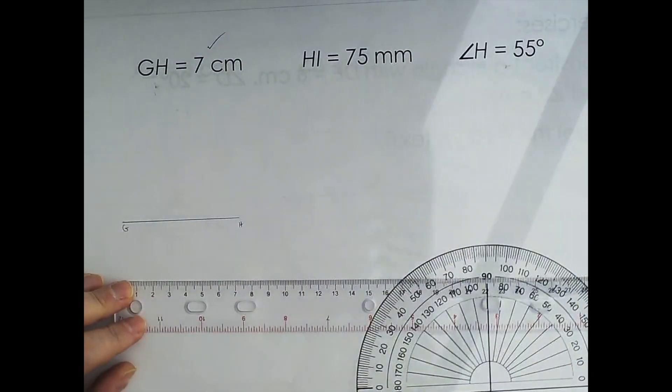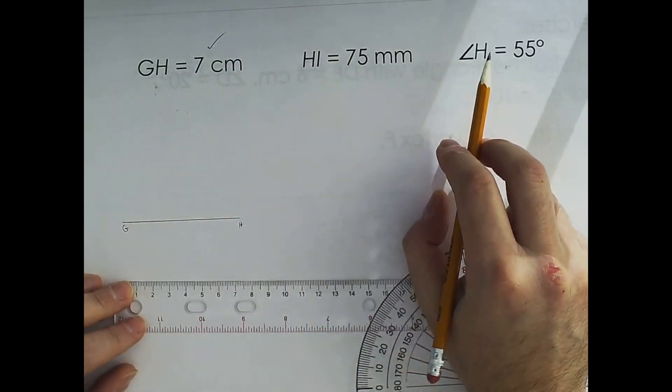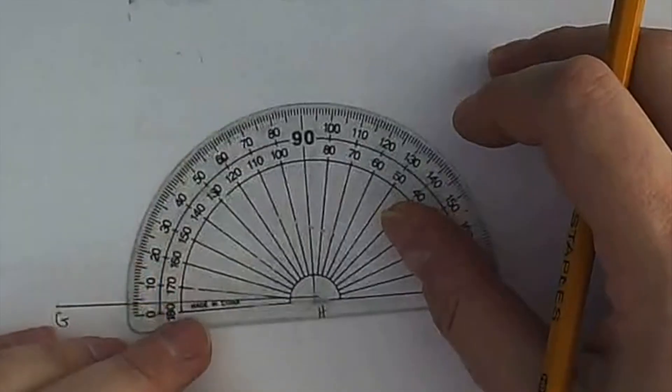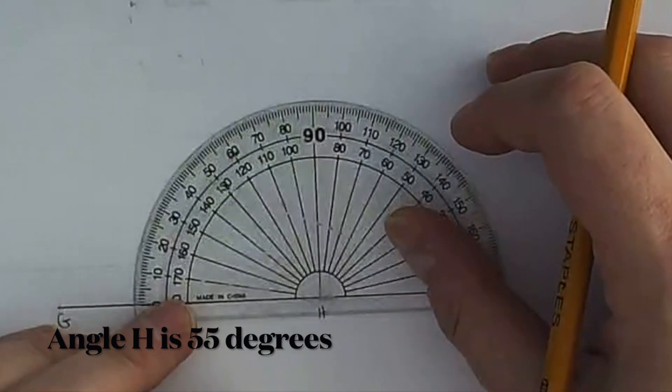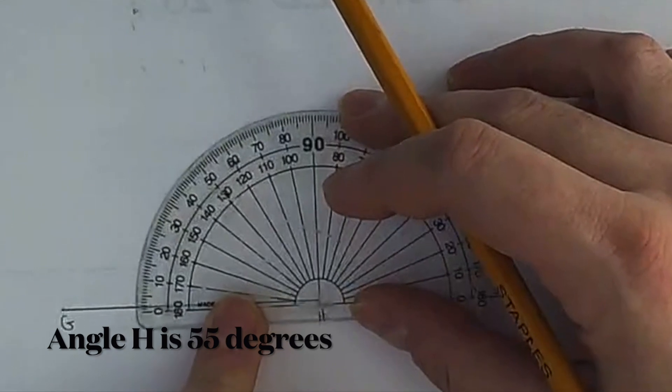The next thing I would do is make angle H. Angle H, since the line is going to the left, I'm going to use the outside numbers on this protractor.